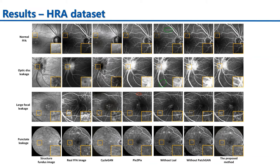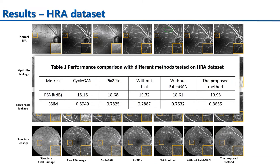To demonstrate the effectiveness of the proposed method in FA image synthesis, we conducted a series of experiments on our HRA dataset and the publicly available dataset, and also compared with other state-of-the-art methods. This figure illustrates that the proposed method outperforms other methods in small vessel and leakage structure generation. We also give a quantitative comparison of different methods over our HRA dataset with the metrics of peak signal-to-noise ratio and structural similarity. As shown in this table, the proposed method significantly surpasses other methods on both metrics.